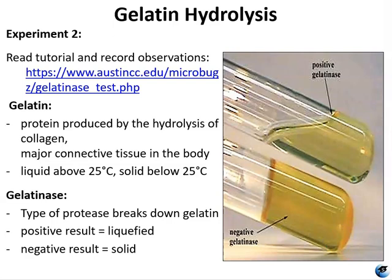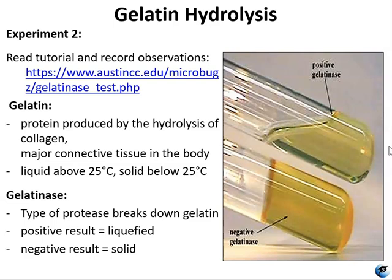Next we're going to look at gelatin hydrolysis. For experiment two, you're going to read through a tutorial covering the concept of gelatin hydrolysis and how testing for it helps differentiate certain genera of bacteria. Gelatin is a protein derived from collagen, a component of vertebrate connective tissue. Gelatinases comprise a family of extracellular enzymes produced and secreted by some microbes in order to hydrolyze gelatin. The nutrient gelatin medium differs from most other solid media in that the solidifying agent is also the substrate for enzymatic activity.